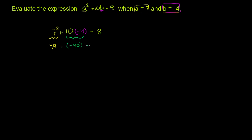And then we have minus 8 back over here. And so we get 49 plus negative 40, which is really the same thing as 49 minus 40, is going to be 9. And then we're going to subtract 8 from that. And so we get 1.